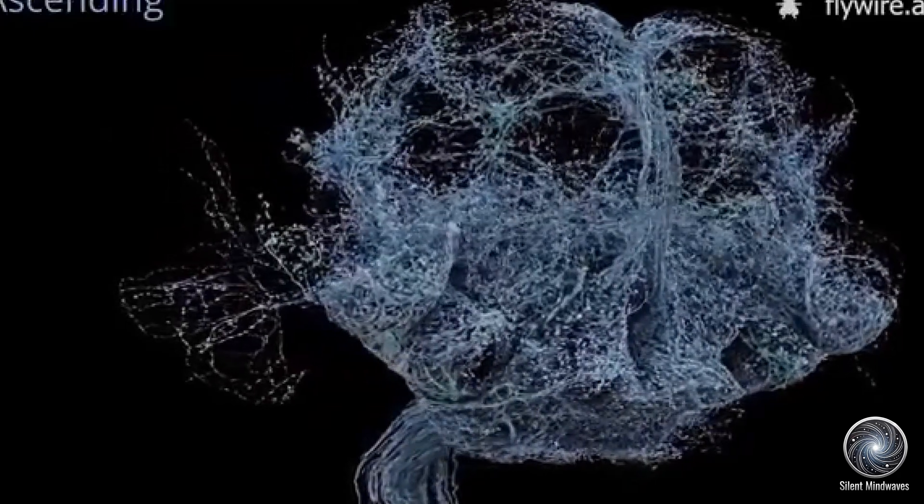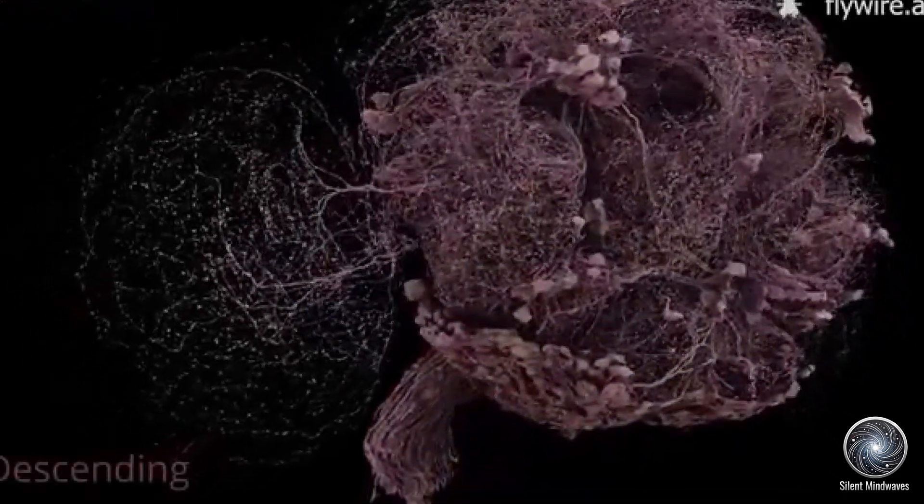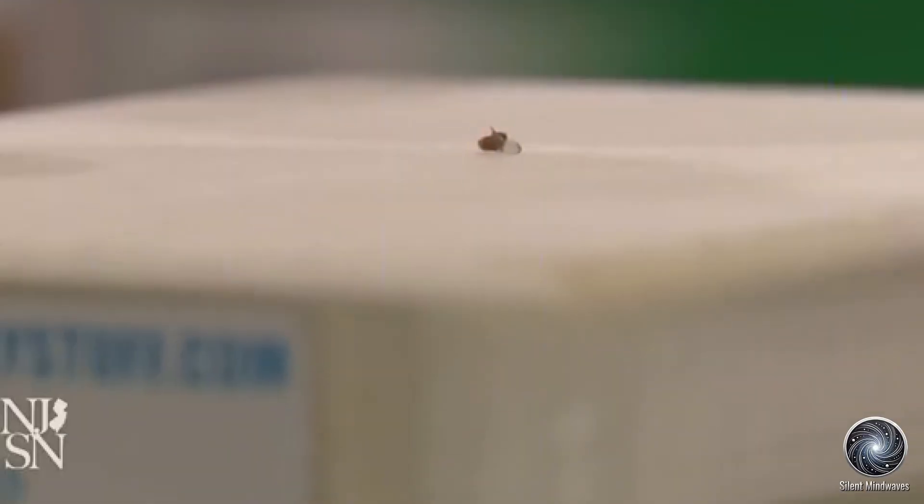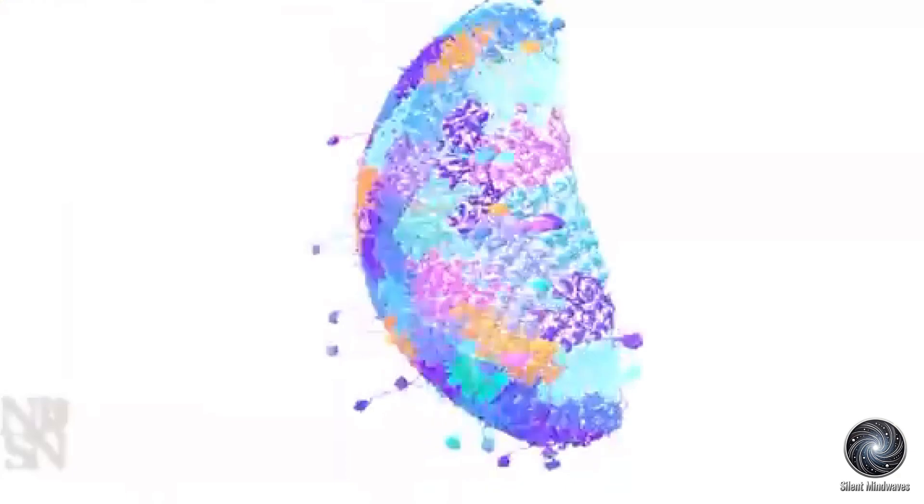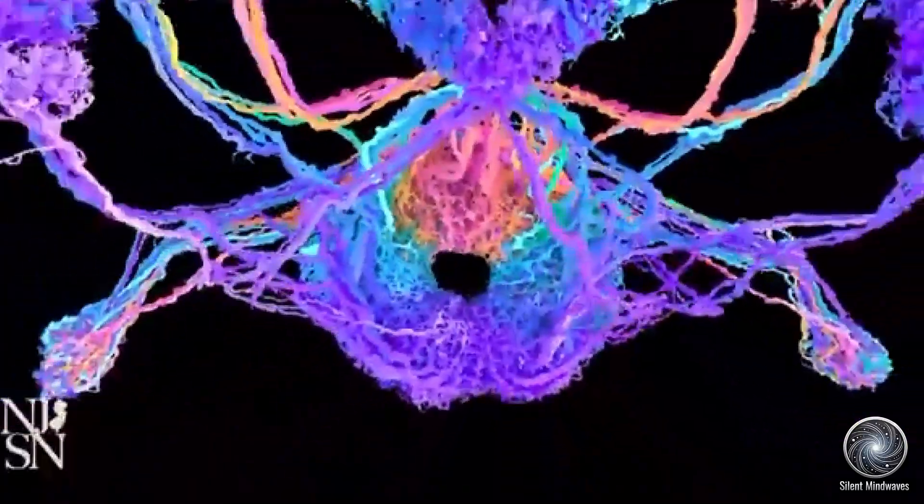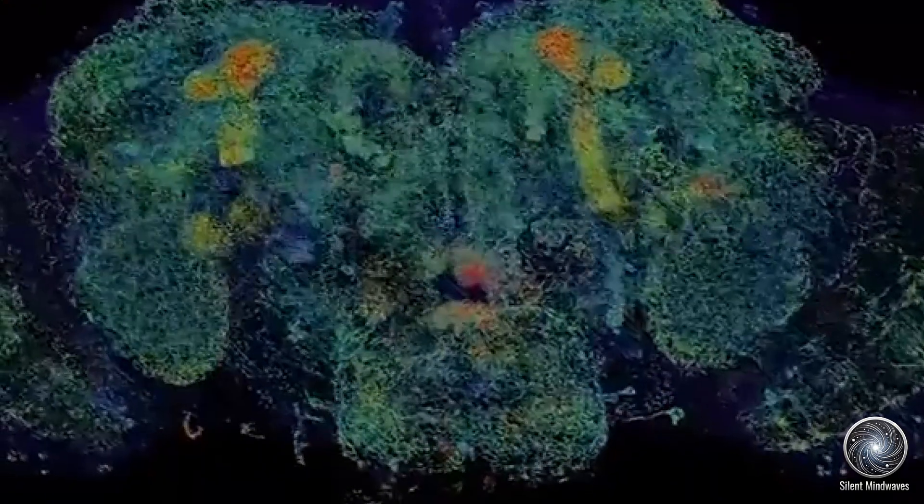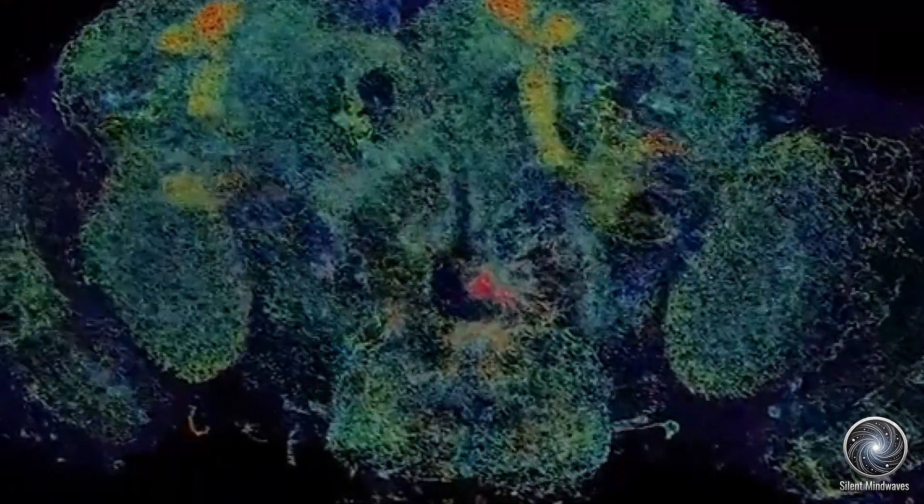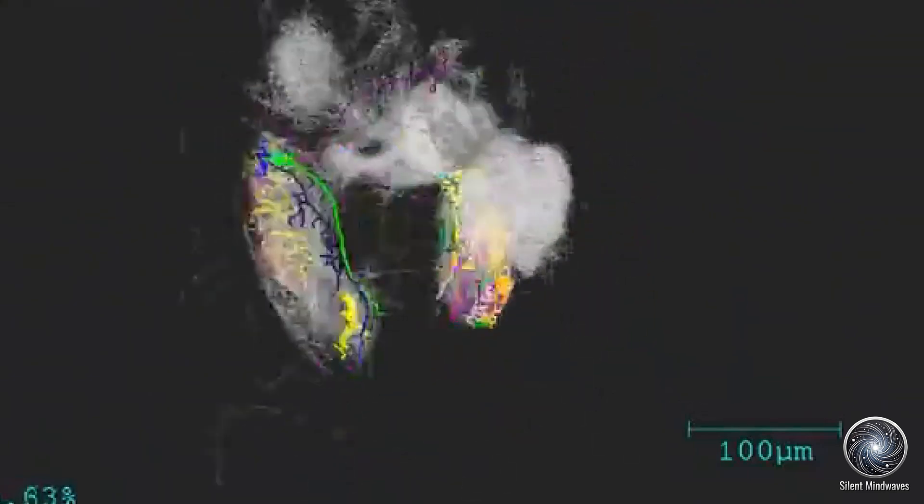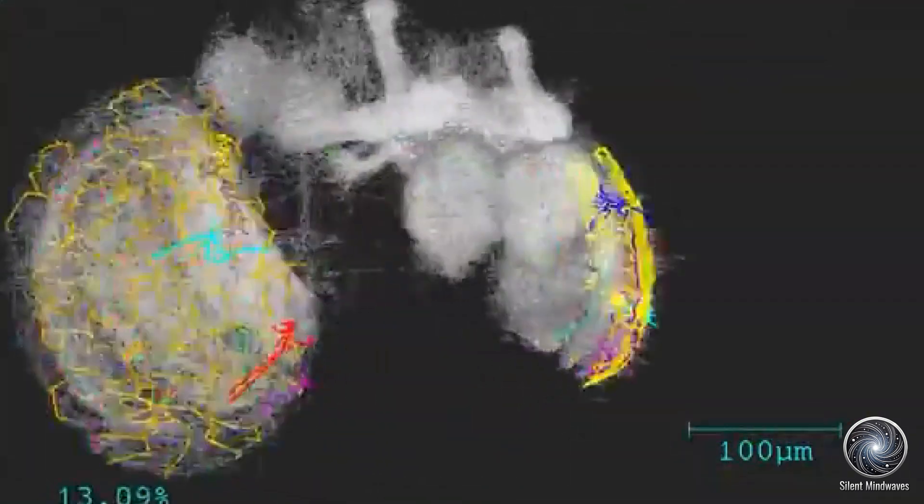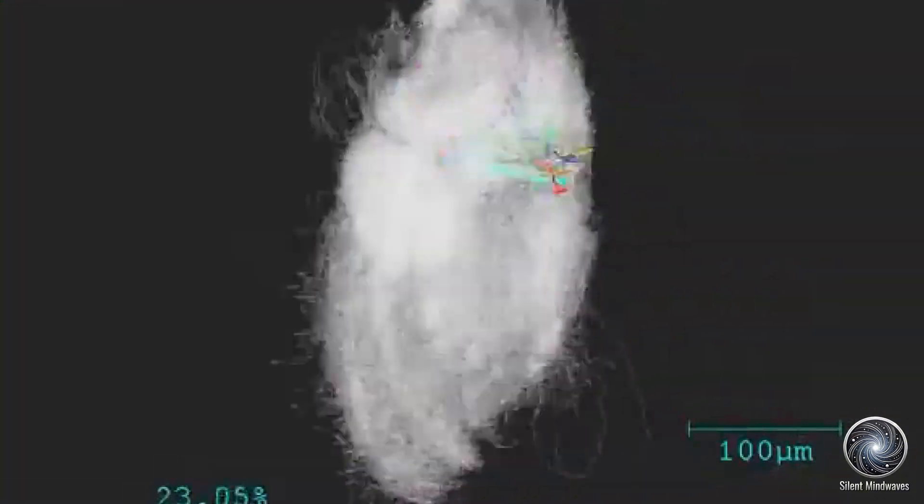But why does mapping a fruit fly's brain matter so much? At the genetic level, humans and fruit flies share about 60% of their DNA, including genes responsible for many vital functions. More surprisingly, about 75% of genes that cause genetic disorders in humans are also found in fruit flies. This genetic similarity makes the fruit fly an ideal model for studying various neurological conditions and potential treatments.